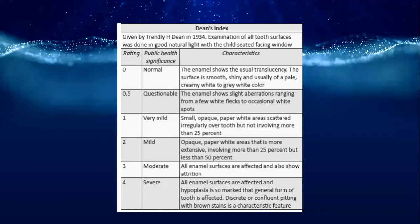Rating 1 (very mild): small opaque paper-white areas scattered irregularly, not involving more than 25% of the tooth surface. Rating 2 (mild): opaque paper-white areas involving more than 25% but less than 50%. Rating 3 (moderate): all enamel surfaces affected with some pitting. Rating 4 (severe): all enamel surfaces affected, hypoplasia is so marked that the general form of the tooth is affected, with discrete or confluent pitting and brown staining.